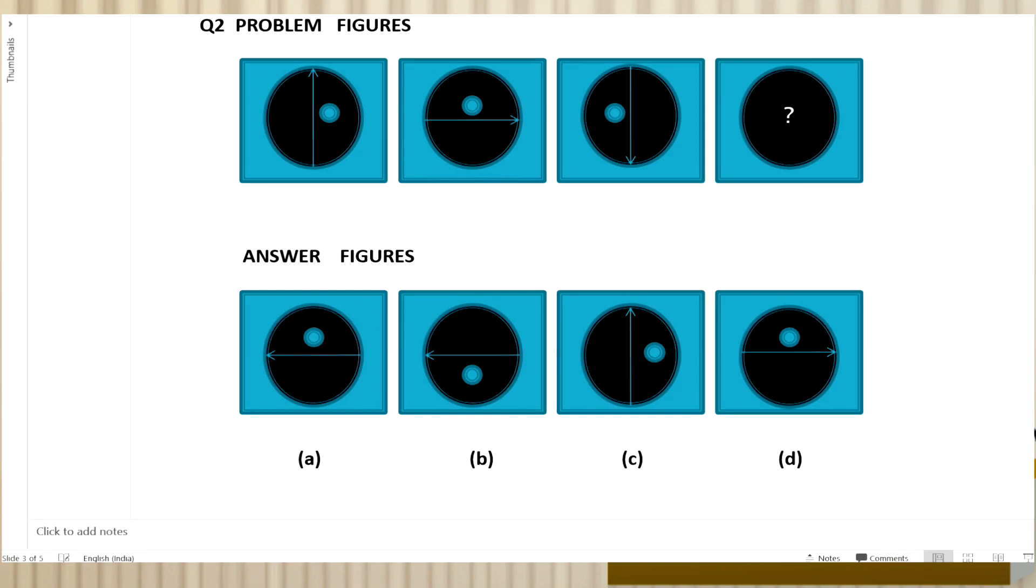Now we come to problem figures. In this type of question, four or five figures are given, and you have to find what the next figure will be. Here you are given three figures in the series, and after that you are given these four answer figures. From these you have to select one and tell the answer figure. How do I do it? Now look at the pattern carefully in the question figure, that is the problem figure.